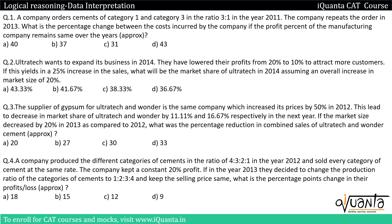The first question: a company orders cements of category 1 and category 3 in ratio 3:1 in year 2011. The company repeats the order in year 2013. What is the percentage change in the cost incurred by the company if the profit percent of the manufacturing company remains the same over the years? So we have to deal with only category 1 and 3 ordered in ratio 3:1.